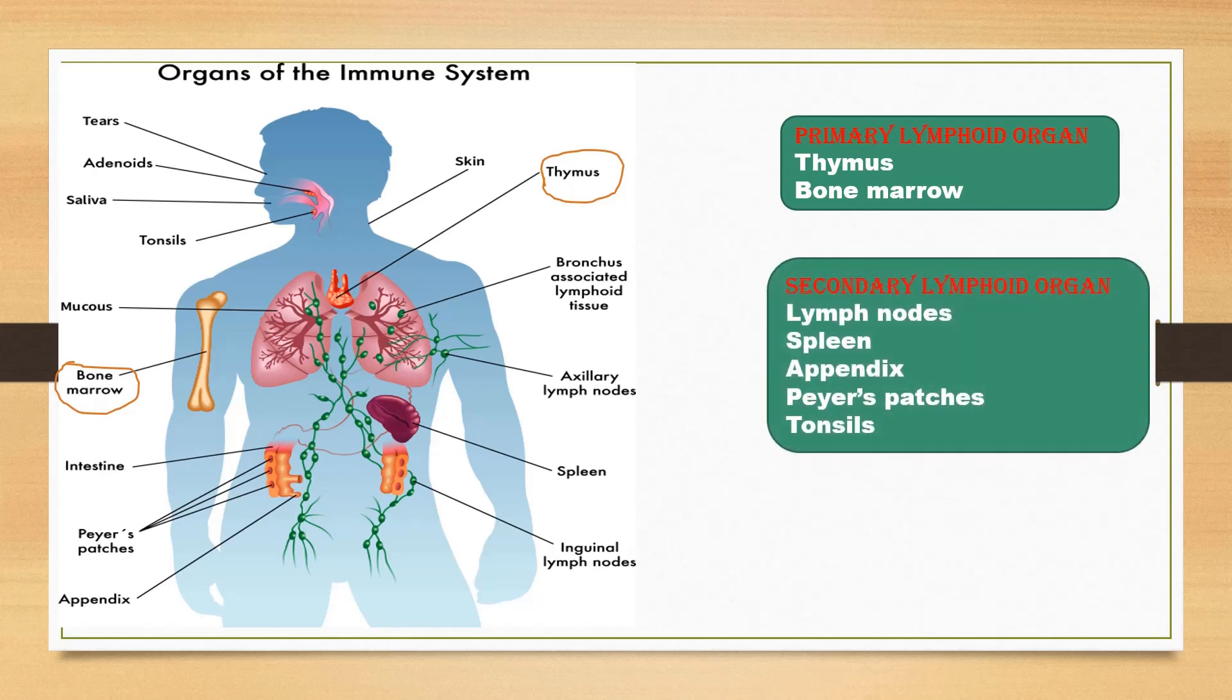Secondary lymphoid organs are lymph nodes, spleen, and mucosa-associated lymphoid tissue like appendix, Peyer's patches, and tonsils. In secondary lymphoid organs, lymphocytes become active on contact with antigen.